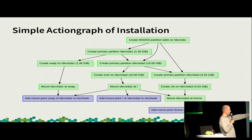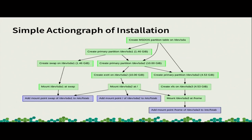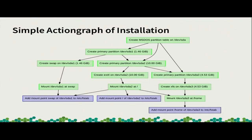This action graph defines what has to be done. Here's a rather simple one: the first action is create an MS-DOS partition table, then underneath this are three actions for creating three partitions — these have to be created in order: partition one, two, three. That's actually a limitation of parted, because when you create a partition with parted you cannot say which number it should have — you just say create one and it picks the next free number. After creating partitions, you can create the file system, mount the file system, and add the mount point to fstab.